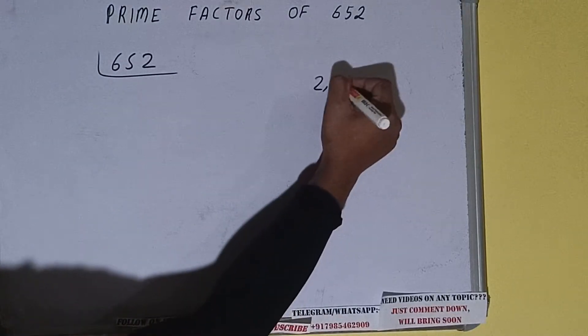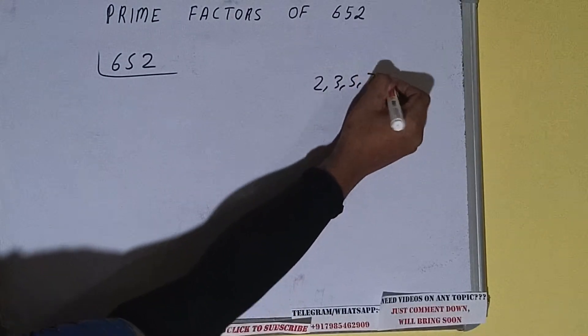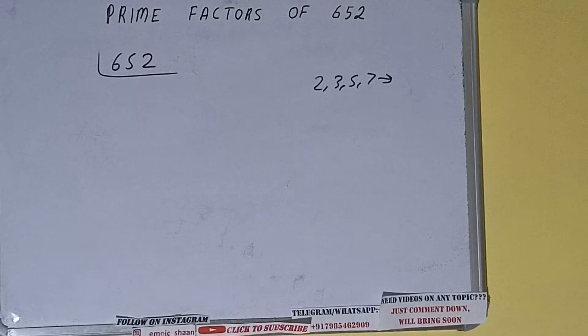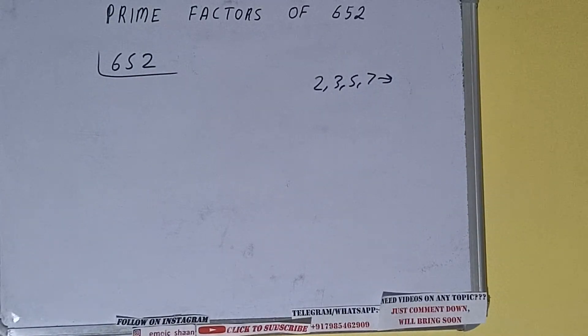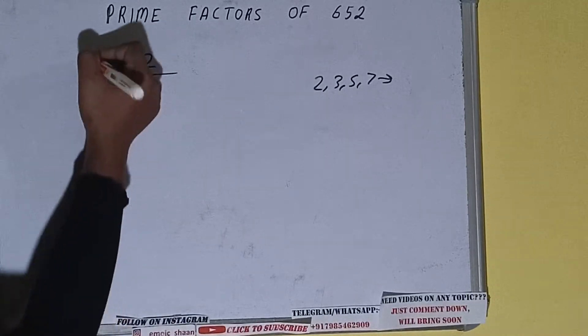We'll check with the lowest prime number we have, that is 2. Is the number 652 divisible by 2? Yes it is, because the number is even. So divide it and we'll be having 326.